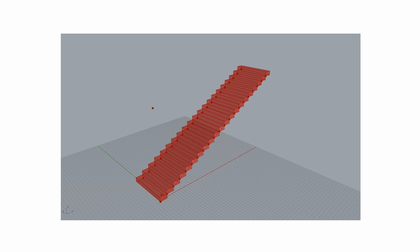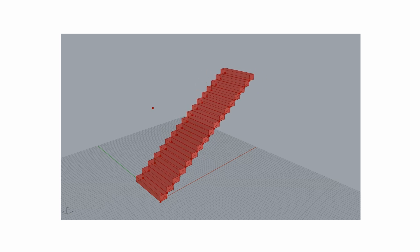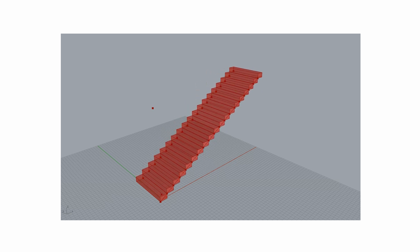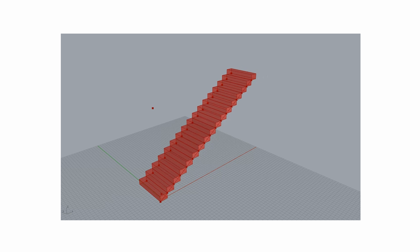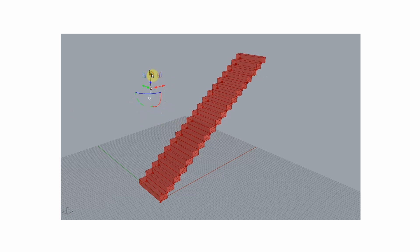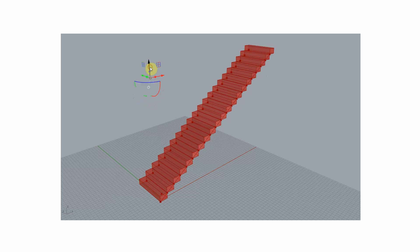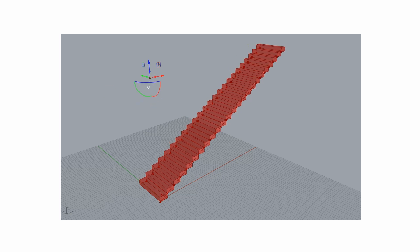Welcome to this video tutorial on how to create a simple parametric staircase model in Grasshopper for Rhino. In this video I'm going to be creating a staircase to span between two floors, using Grasshopper to allow the staircase to become parametric so that I can adjust its length, height, and width very easily, and all of the attributes of the staircase will follow any of those adjustments.